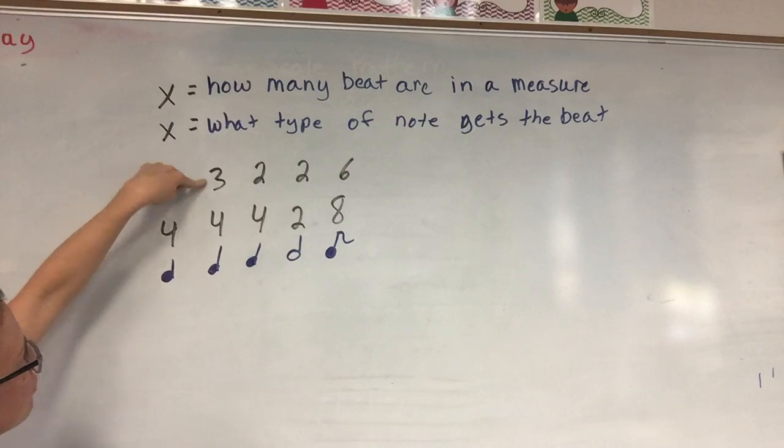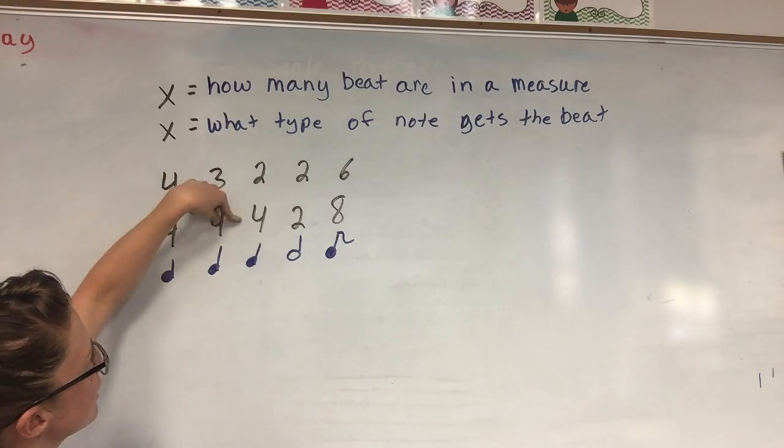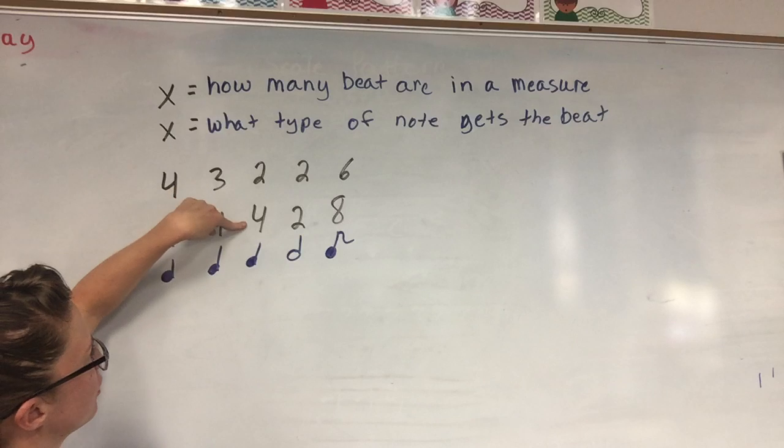Three four time is three quarter notes. Two four time is two beats in a measure, the quarter note gets the beat.